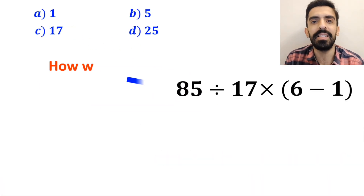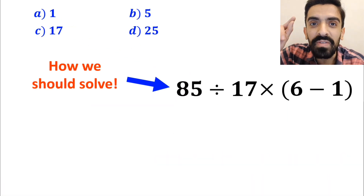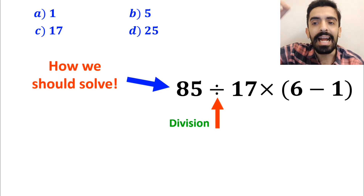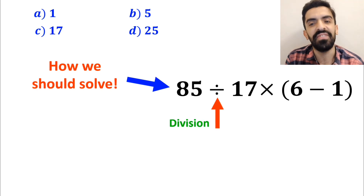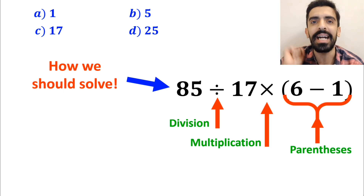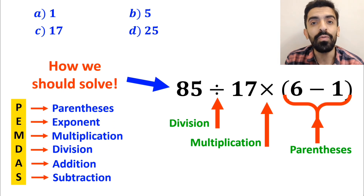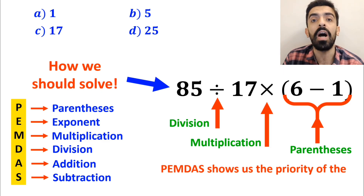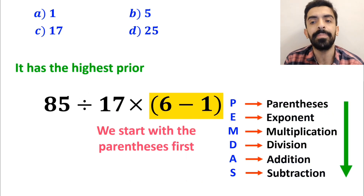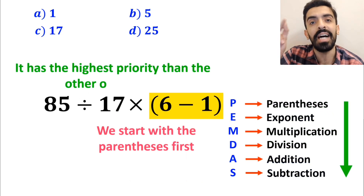Now let me explain step by step how to solve this expression correctly. As you can see on the screen, this expression first has a division sign, then a multiplication sign, and finally parenthesis. To solve this question we need to follow PEMDAS, which shows us the priority of the order of operations. We start with the parenthesis first, because it has the highest priority.